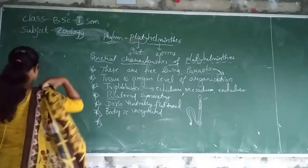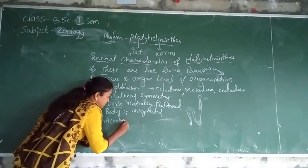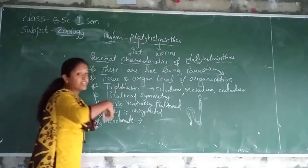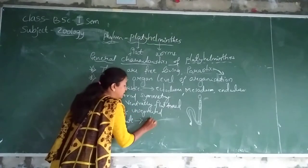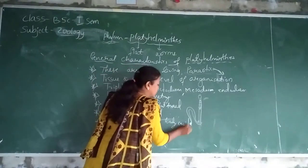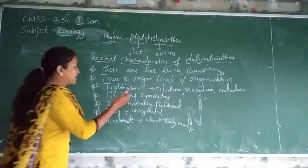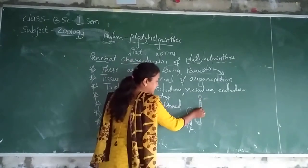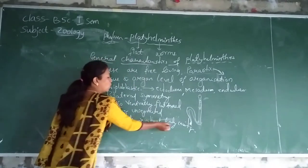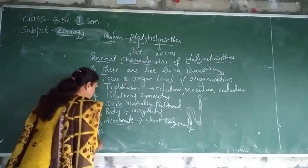The next is body is acoelomate. Acoelomate means there is no body cavity. Without a body cavity we say acoelomate. There is a jelly-like substance that is occupied between the layers of ectoderm. There is no body cavity — that is called acoelomate animals.